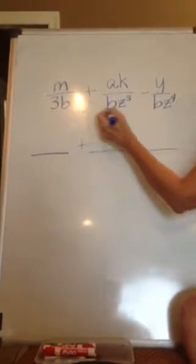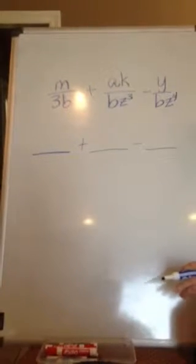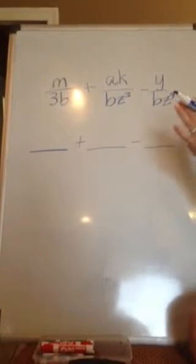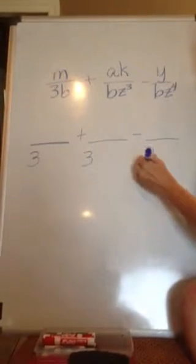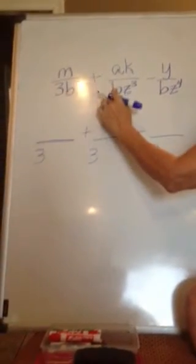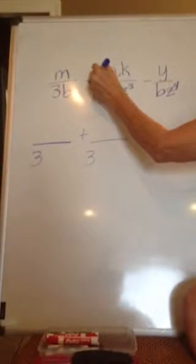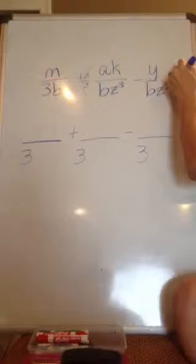The coefficients are 3, 1, and 1. So the common denominator for 3, 1, and 1 would simply be 3. 3 is in this one, 3 is not in this one, so we'll have to multiply by 3 over 3. And 3 is also not in this one.